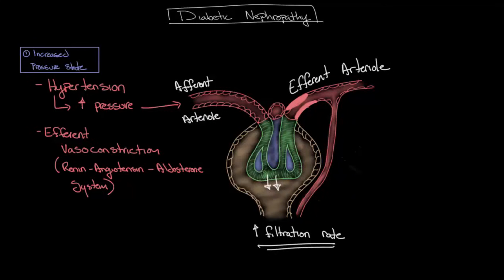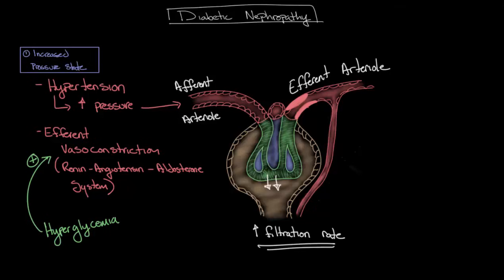But why exactly is this happening? If individuals with diabetes often have increased renal perfusion due to hypertension, why is a low-pressure system like the renin-angiotensin-aldosterone system activated? The answer is not exactly intuitive. For some reason, the underlying physiology of diabetes — specifically the hyperglycemia — results in a direct intrarenal activation of the renin-angiotensin-aldosterone system, independent of the individual's volume status, and subsequently causes efferent vasoconstriction and increases the glomerular filtration rate.